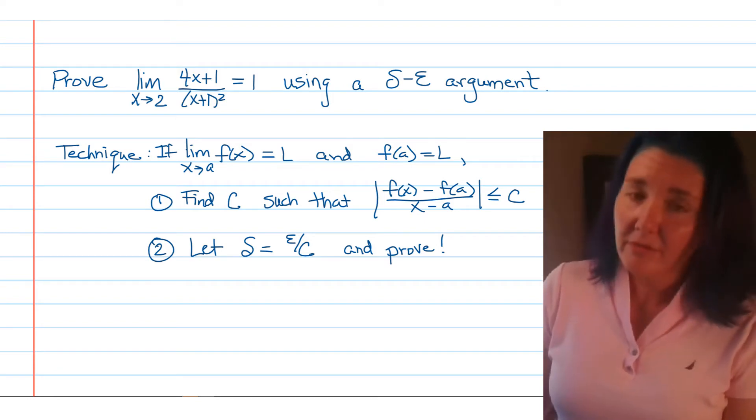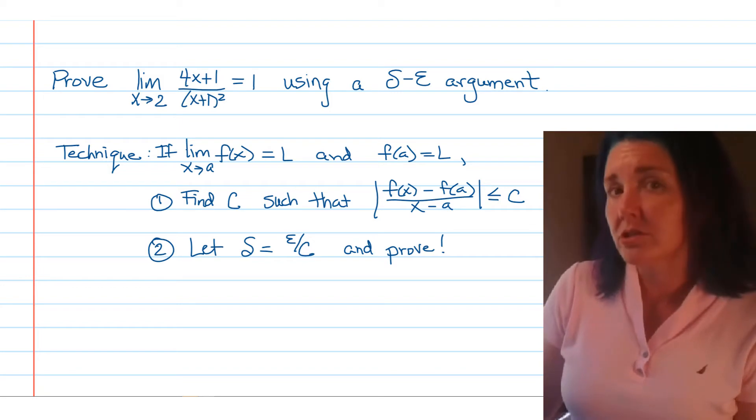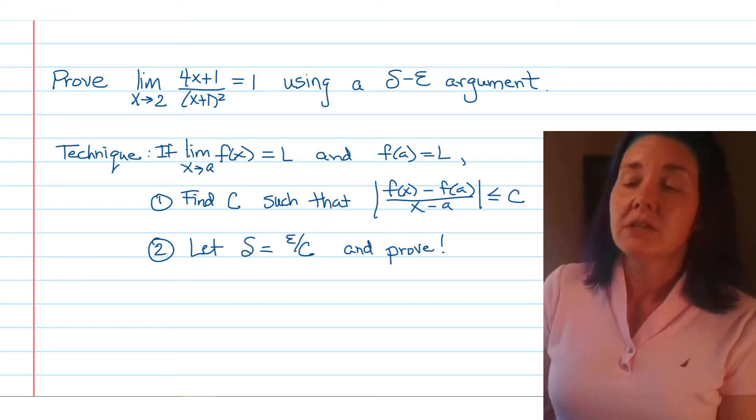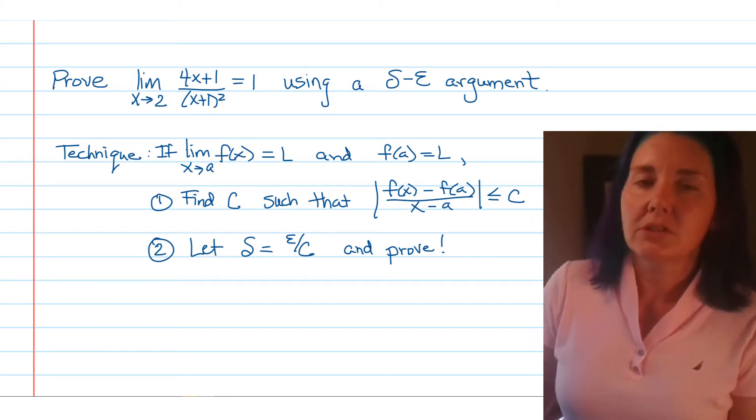This is part two of our discussion of how to prove the limit of a rational function using a delta-epsilon argument. In the first part we learned that we can use a certain technique under certain circumstances to find our delta, which is the key to a delta-epsilon proof.